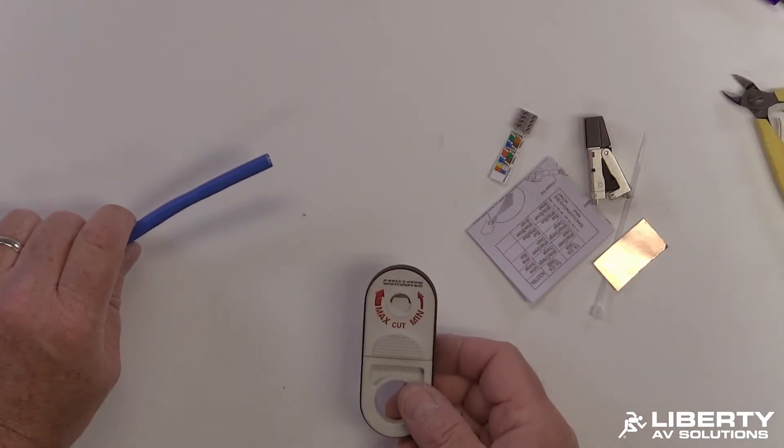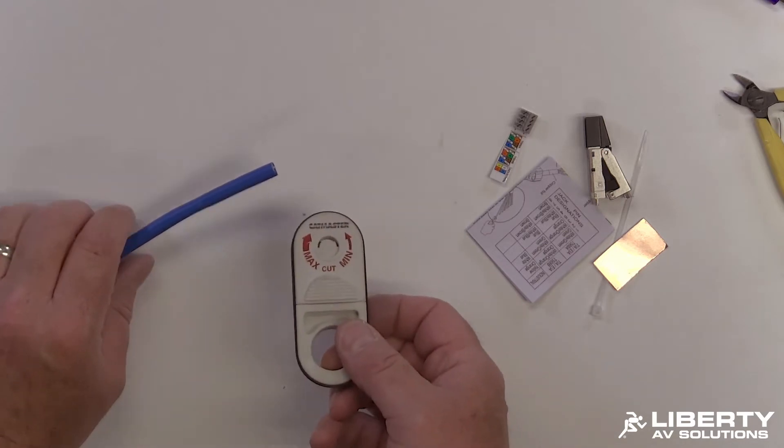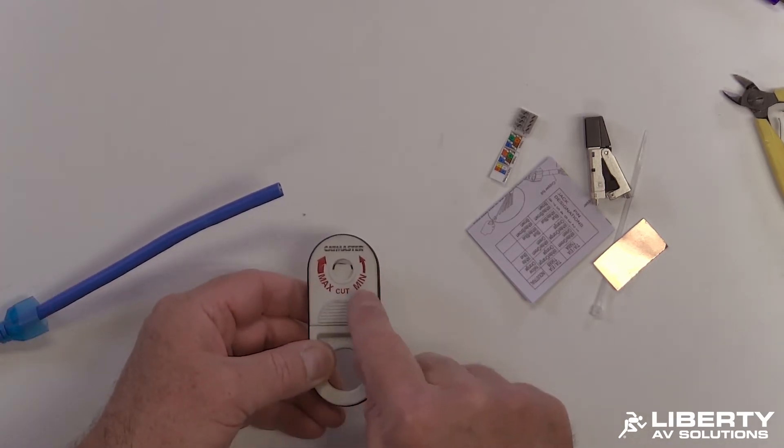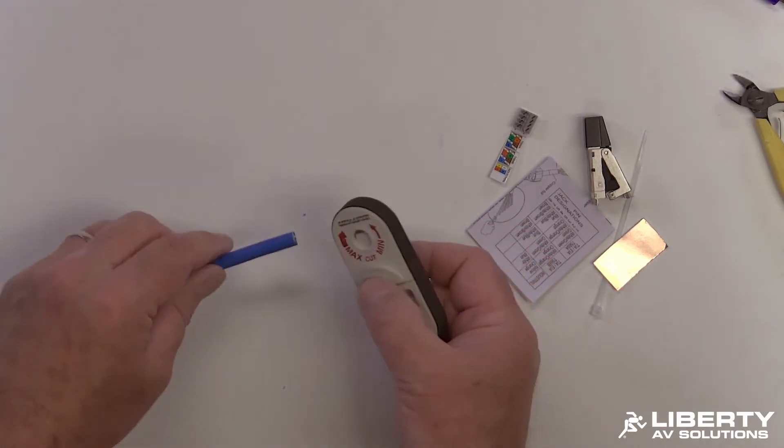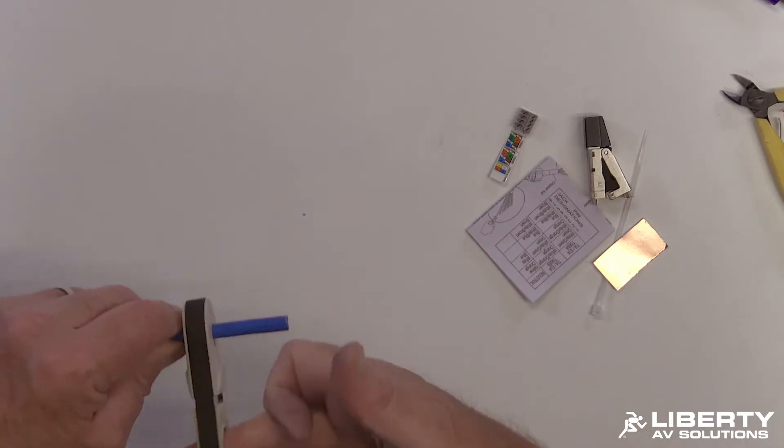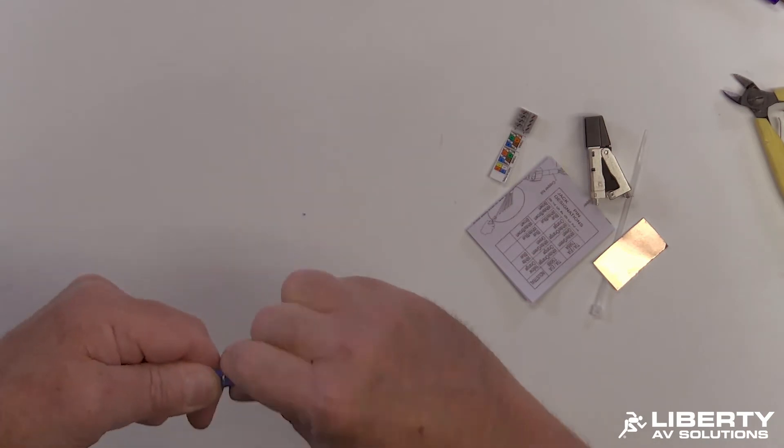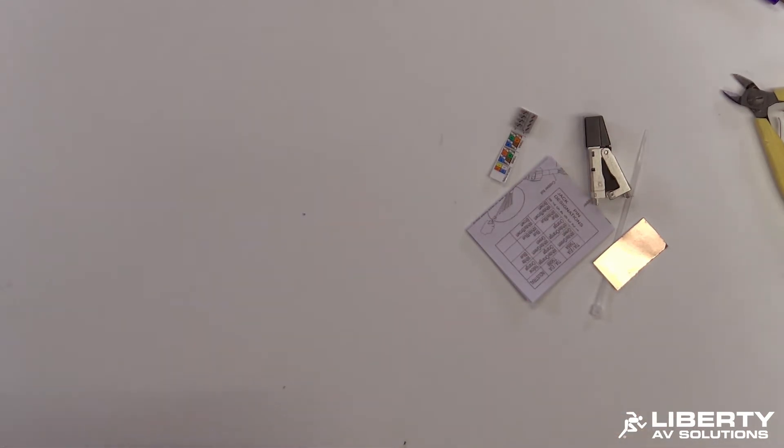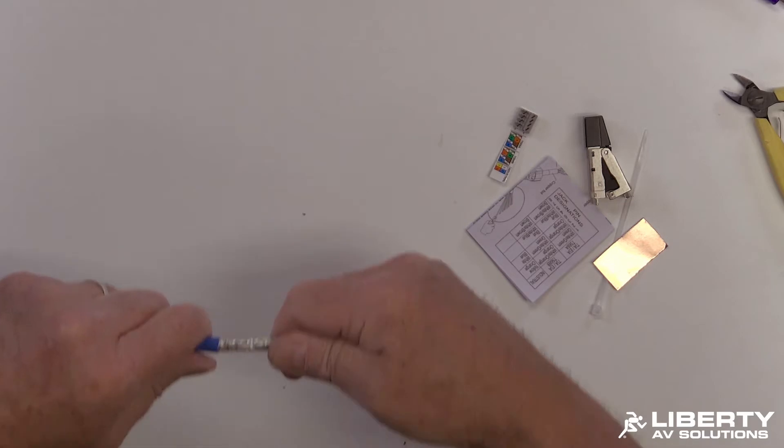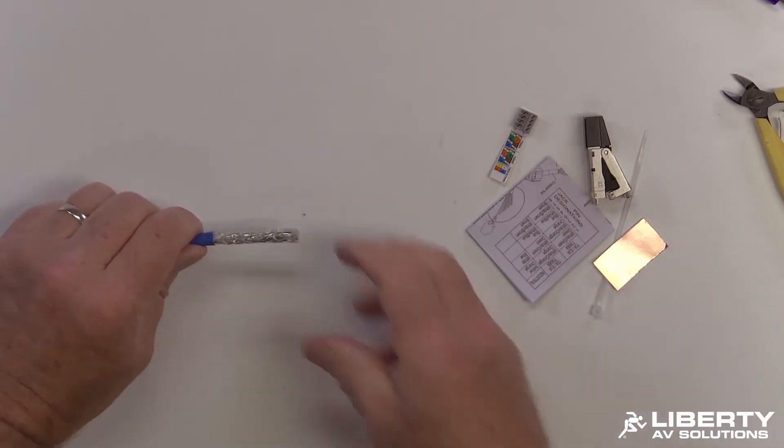First step is going to be to prepare your cable. I want to go ahead and strip off the jacket. So I have a cigar cutter stripper, I have a min-spin, max-spin, I want to use the min-spin, do about one and a half to two inches of jacket and just kind of give it a couple spins around and cut through the jacket. Go ahead and separate the jacket. We've got the jacket separated.